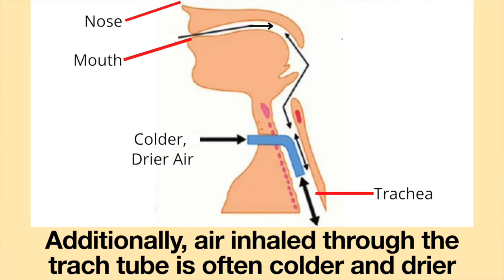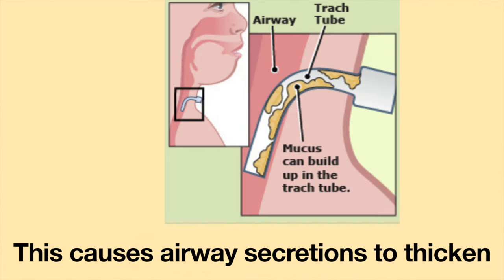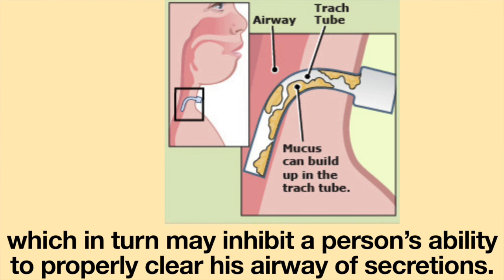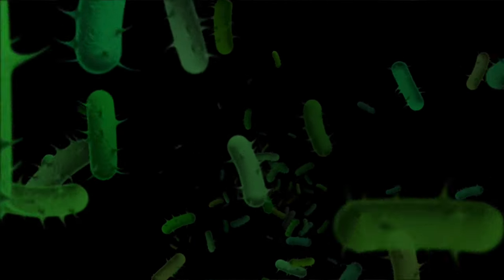Additionally, air inhaled through the tracheostomy tube is often colder and drier than that which is inhaled through the nose and mouth. This causes airway secretions to thicken, which in turn may inhibit a person's ability to properly clear his airway of secretions. This can lead to infection.